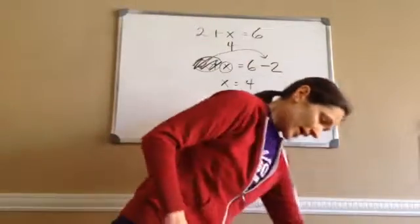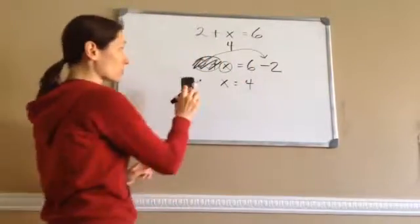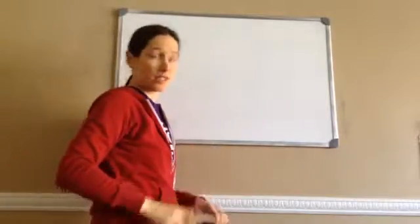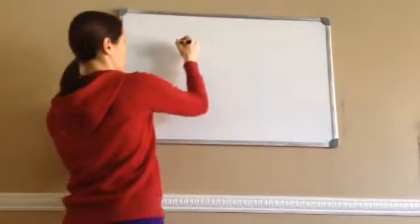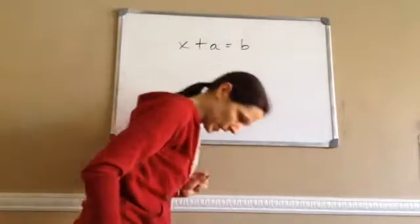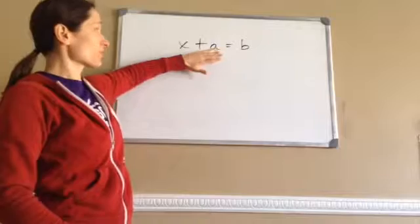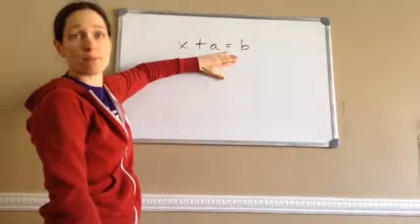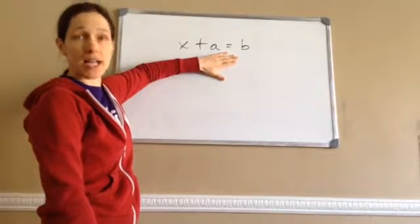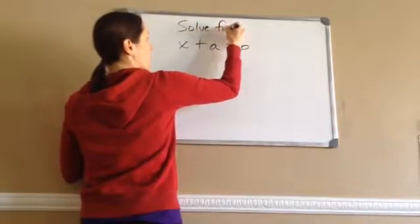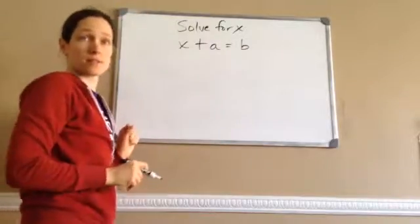Alright, now in math, a literal equation is an equation that does not have numbers in it. It just has letters. Okay? So, x plus a equals b. This is where it gets real confusing, because look right here. There are no numbers, but they told me to solve for x.